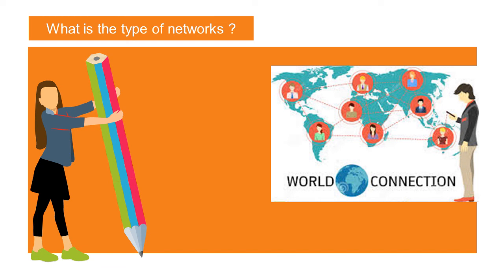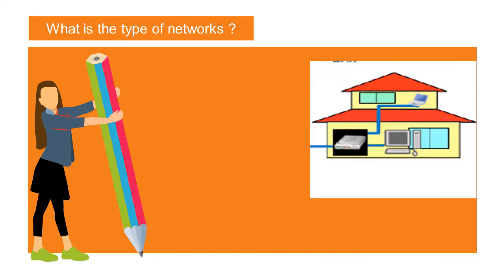What type of network is shown here? You see different countries and different networks — this is the World Wide Web, a worldwide connection. And here, you see one building — that is LAN, a local area network.